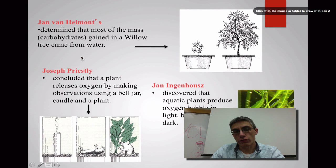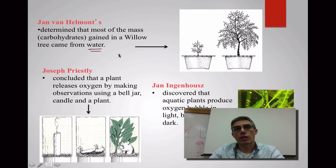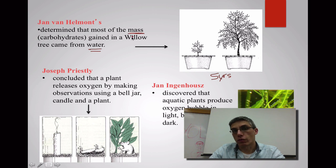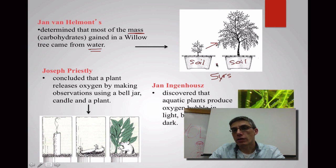Before we get too deep into our discussion of photosynthesis, it's really important that we look at three separate scientists who were important in helping us understand this process. Jan Van Helmont was really important because he helped us figure out that water was an important part of photosynthesis. He did this by making careful observations of a willow tree over a period of five years, looking at its mass from year 1 to year 5. He noticed the mass definitely increased, and after five years he determined it wasn't the soil — the amount of soil at the beginning and end was exactly the same — so he concluded it must have been water that increased the mass of that tree.